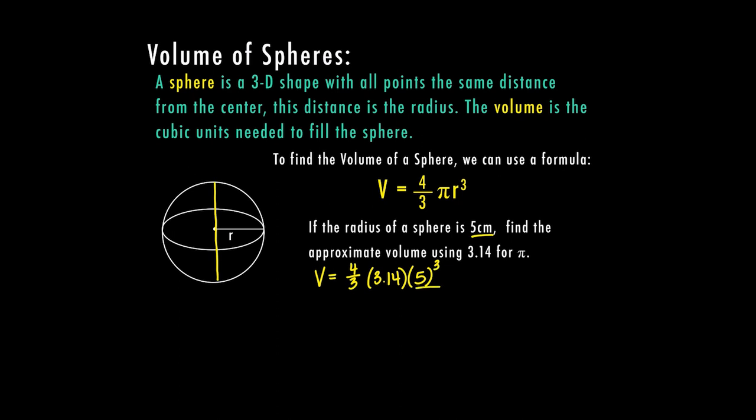I do have to follow order of operations. So five cubed is going to be first. So four-thirds times pi times five cubed, which is 125. So now when I multiply all of this in the numerator, four times pi times 125, I end up with 1570. I still have to remember to divide by three. So my answer is approximately 523.3 centimeters cubed.